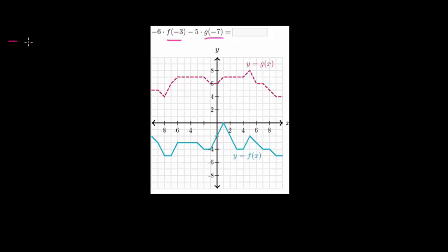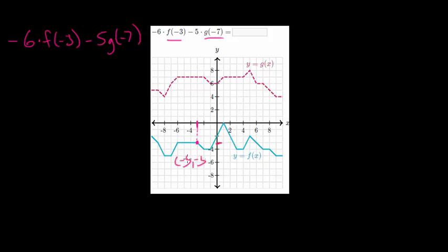Let's try another one. We have minus 6 times f of minus 3 and minus 5 times g of minus 7. For f of minus 3, given that x is minus 3, we go to the blue curve and the y value looks to be also minus 3. So f of minus 3 is negative 3. For g of minus 7, here's negative 7 — we go up to the purple curve and it has a y value of 6, so we replace g of minus 7 with positive 6.